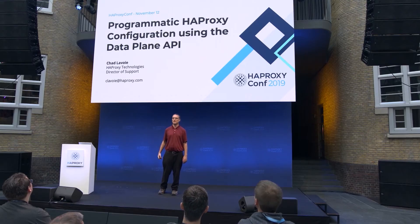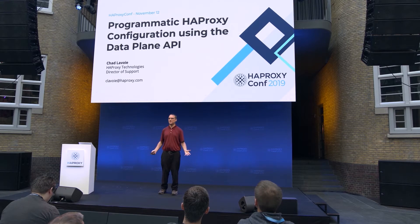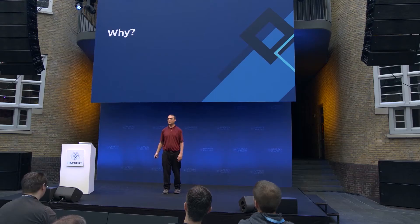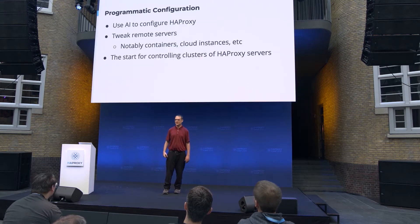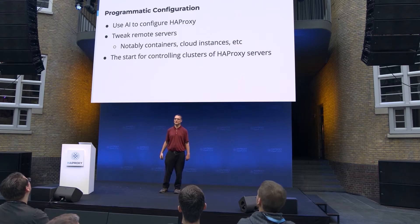I'm going to be talking about the programmatic API for HAProxy, or the Data Plane API, which is a way to manage HAProxy configuration. Currently you have an HAProxy configuration file either built by template or by hand, and you have all sorts of configuration systems that need to be able to modify it, so you need an HTTP-based system in order to do it.